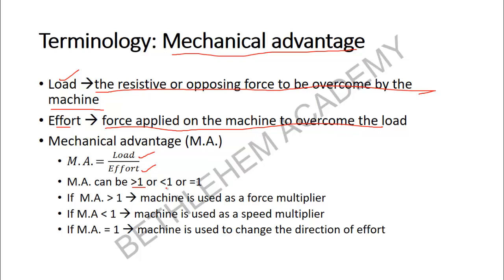Mechanical advantage can be greater than one, less than one, or equal to one. If you lift a large load with a small effort, MA is greater than one — the machine acts as a force multiplier. If you lift only a small load with a small effort, MA is less than one. If load and effort are equal, MA equals one. When MA is less than one, the machine is used as a speed multiplier. When MA equals one, the machine is used to change the direction of the effort.